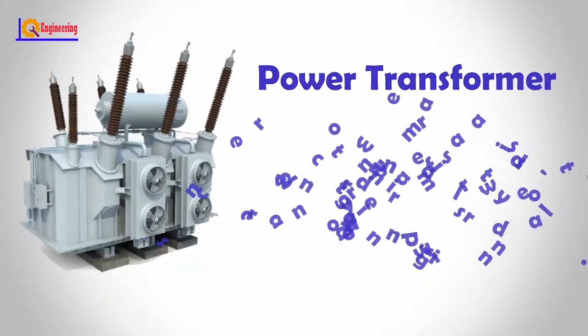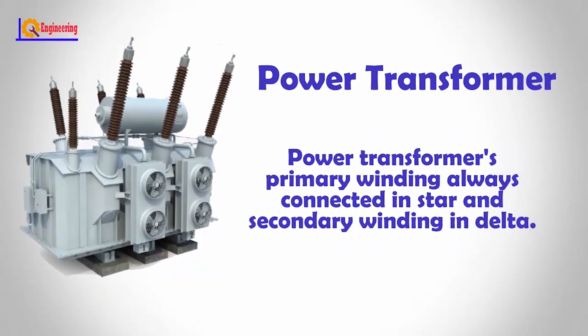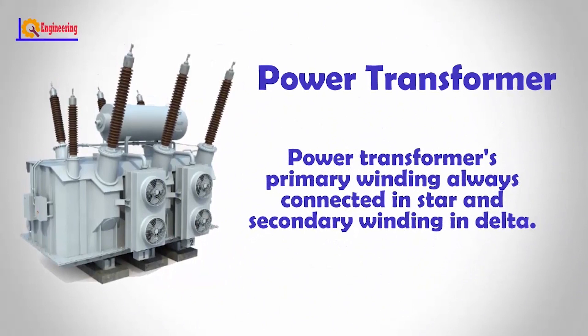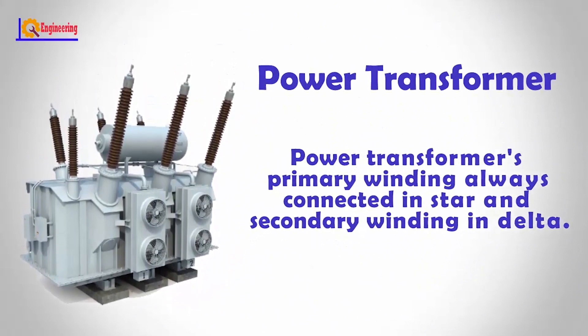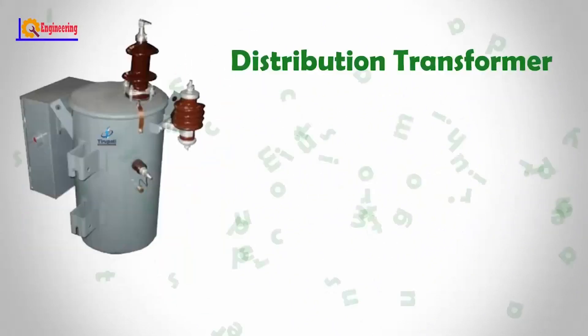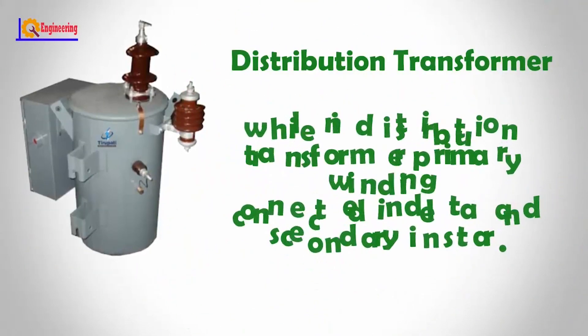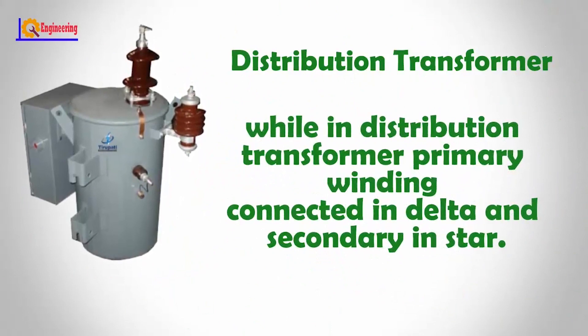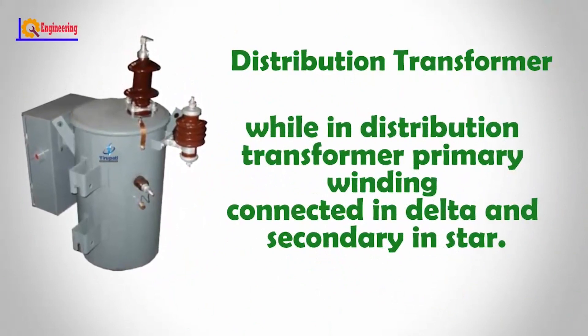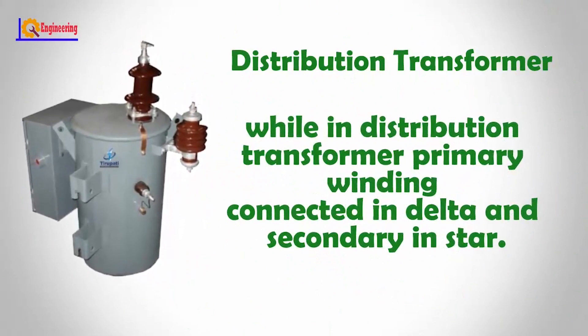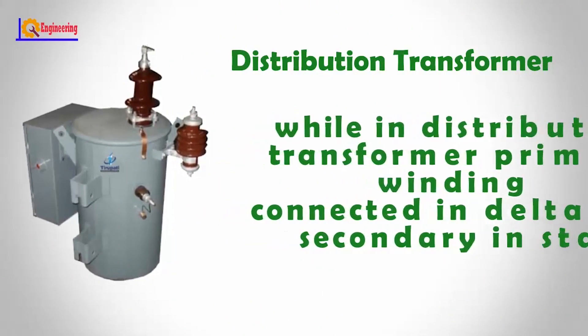In a power transformer, the primary winding is always connected in star and the secondary winding in delta. In a distribution transformer, the primary winding is connected in delta and the secondary in star.